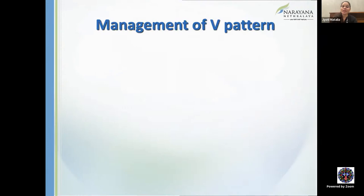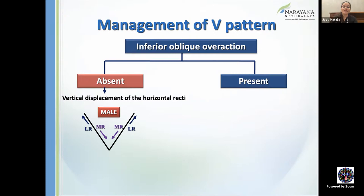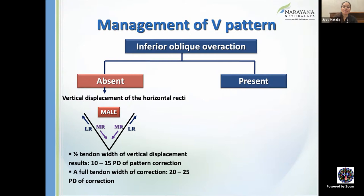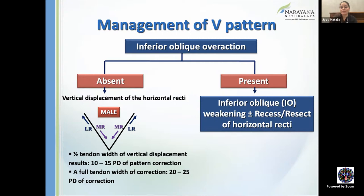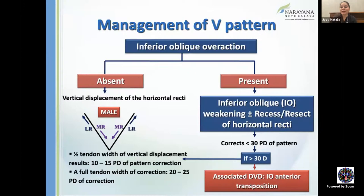For V-pattern management with inferior oblique overaction, a weakening procedure combined with horizontal muscle surgery can correct less than 30 PD of pattern. If the V-pattern exceeds 30 PD, simultaneously perform vertical displacement of horizontal recti as well. If there is associated DVD, perform inferior oblique anterior transposition. These surgeries were shown in the previous lecture.